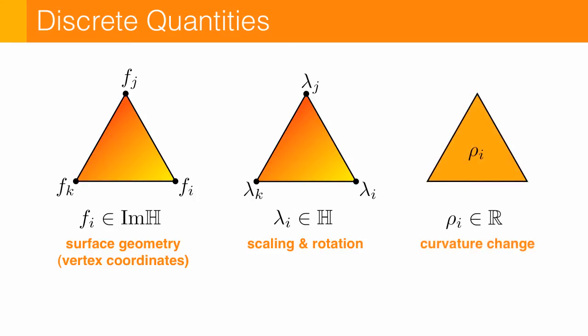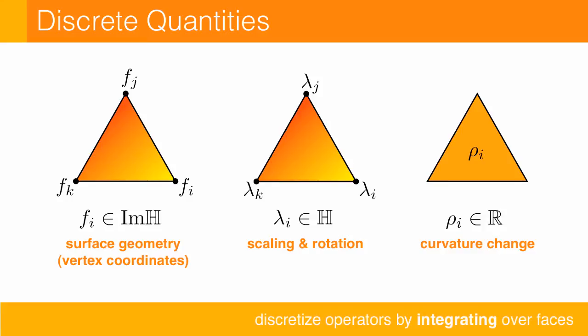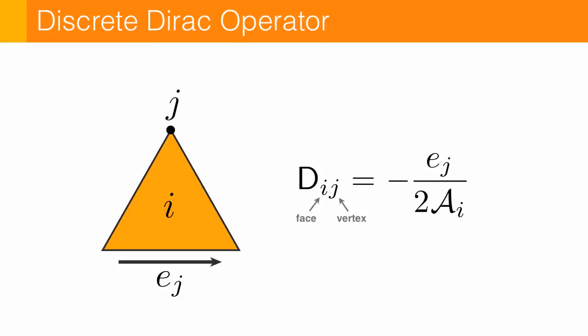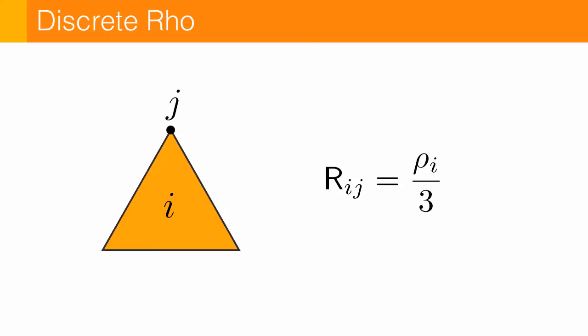And now to discretize, well, we just integrate our smooth operators over each face. This is a standard finite element approach. And so our Dirac operator now becomes a face-vertex adjacency matrix, where the entries are basically the edge vectors divided by the triangle areas. Rho is even simpler, we get this matrix R that averages values from vertices to faces, and then multiplies by the value of rho stored in each face.